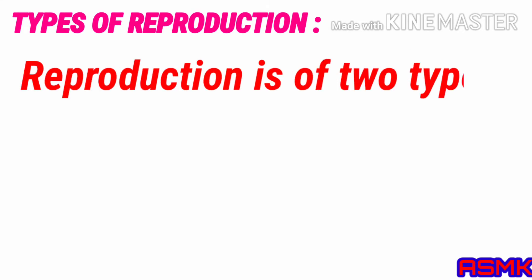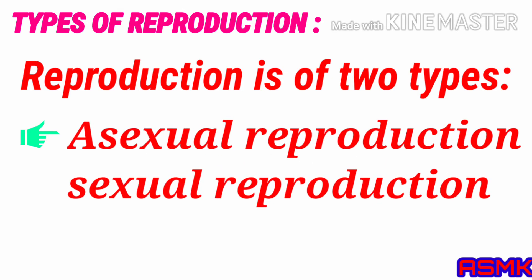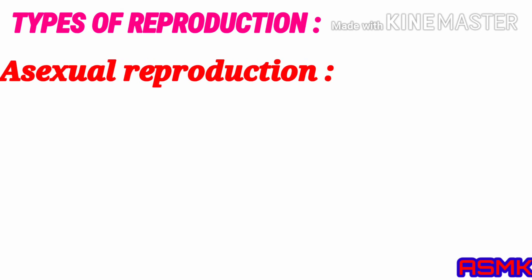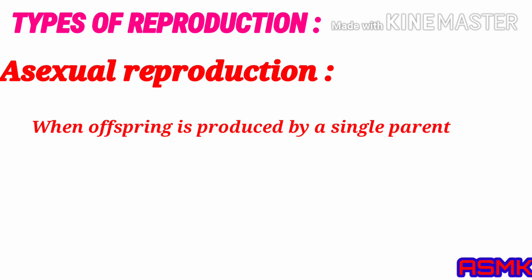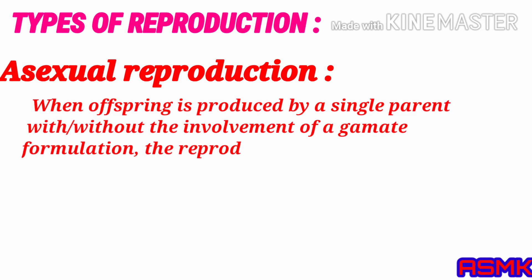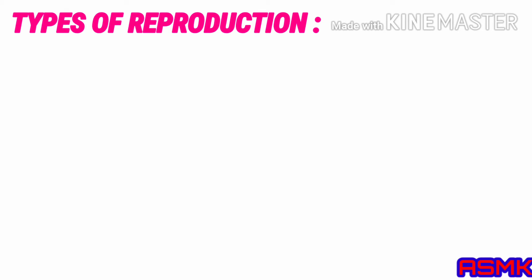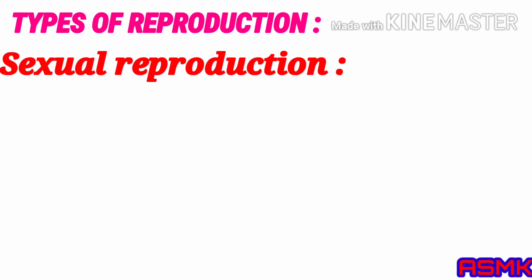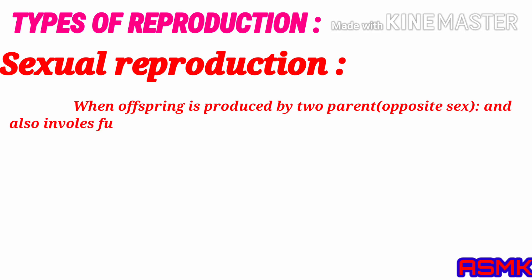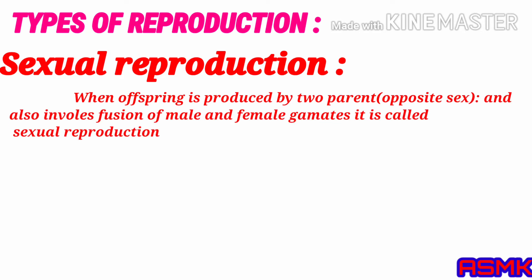Types of reproduction: reproduction is of two types, asexual reproduction and sexual reproduction. In asexual reproduction, offspring is produced by a single parent with or without the involvement of gamete formation. In sexual reproduction, offspring is produced by two parents and involves fusion of male and female gametes.